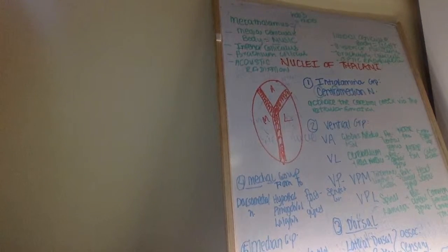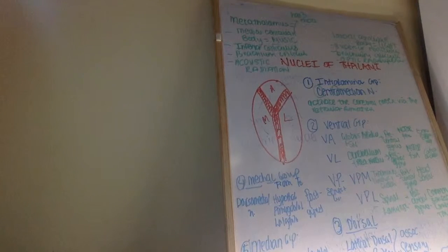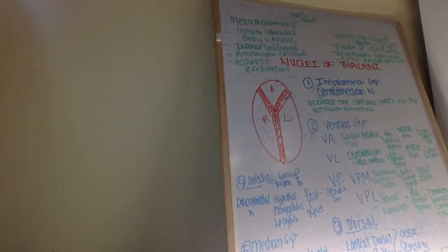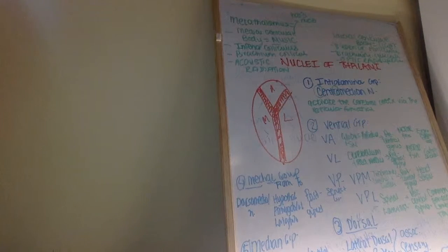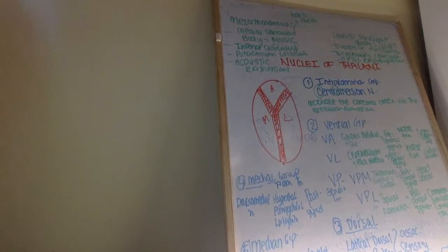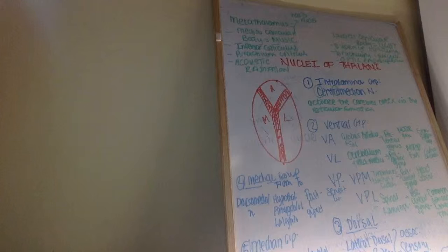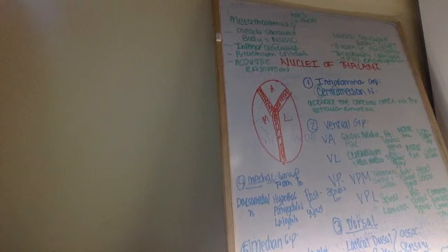Starting with the intralaminar group of nuclei — there's only one nucleus you really need to be aware of here, and that's the centromedian nucleus. It's located within the internal medullary lamina, literally inside the center and middle of the thalamus, which is why it's called centromedian. To remember its function, enlarge the letters C and R in 'centrom' — it activates the cerebral cortex via the reticular formation.